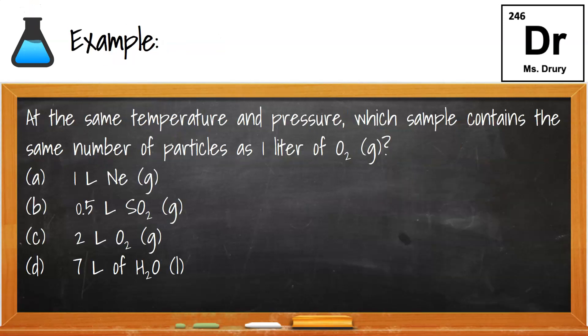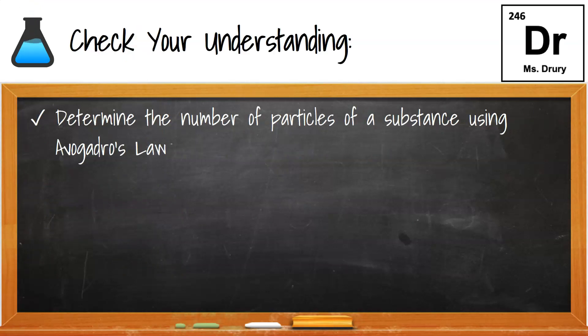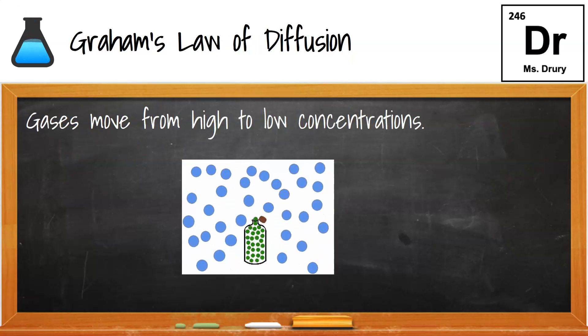So that means you're going to fit the same particles. An example of the questions that are really easy, say at the same temperature or pressure, what sample has the same number of particles as a liter of O2, and all you're doing is really matching the fact that it says one liter of O2, so you need a liter for a different gas. So the answer was A, because it said one liter, literally just matching. So you should be able to determine the number of particles in a substance using that law of matching.